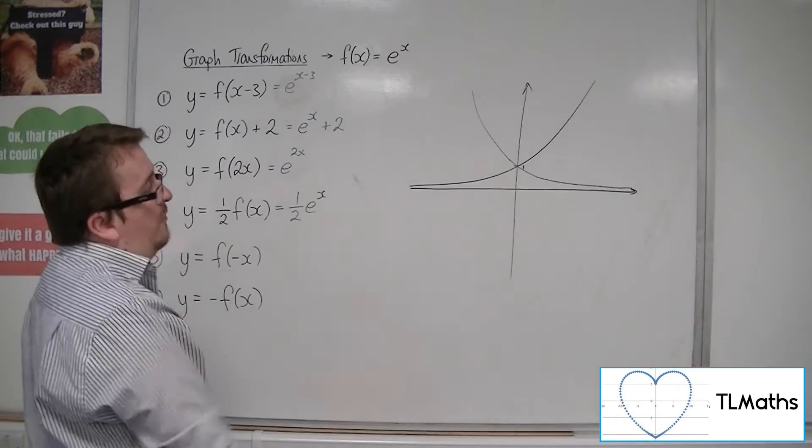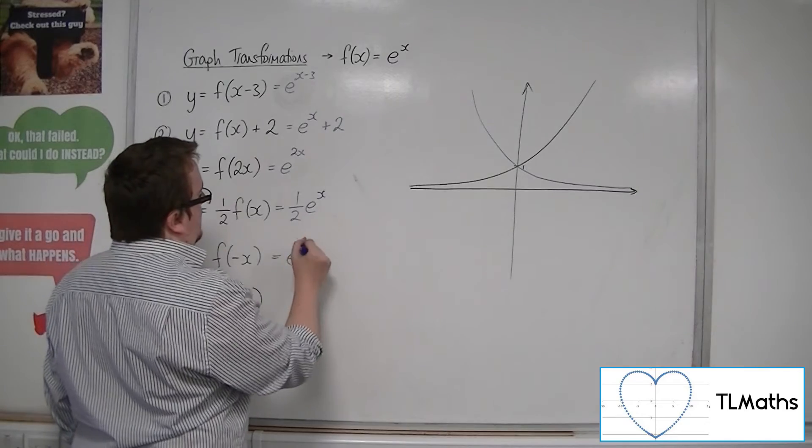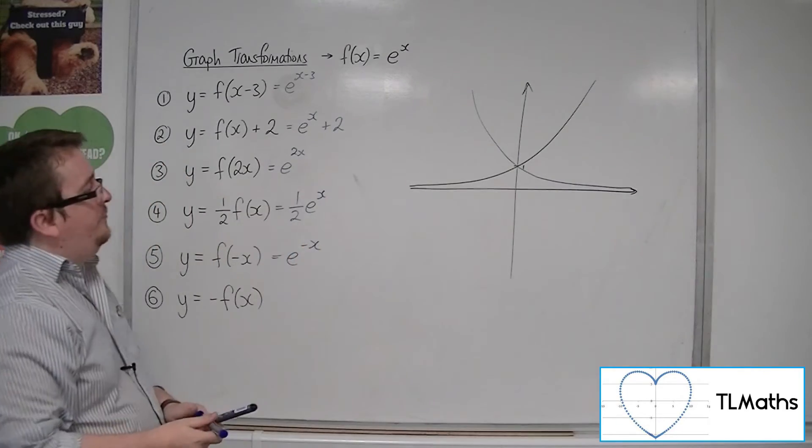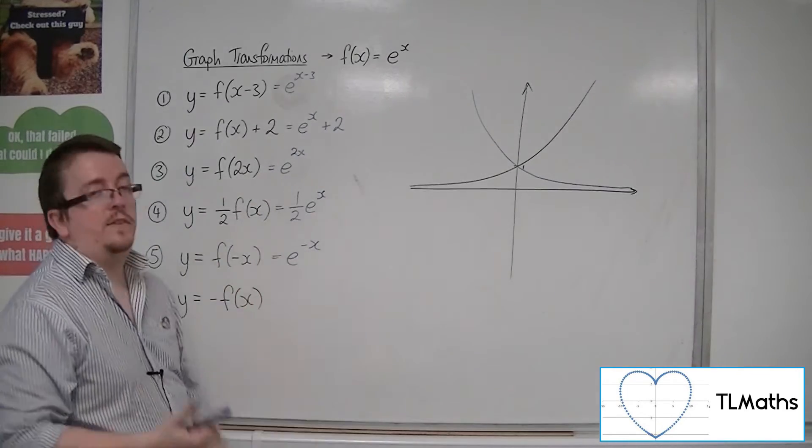So, every point has been reflected in the y-axis. And this would be e to the minus x. Because the x is being replaced with minus x in the function.